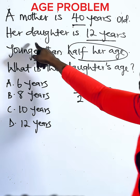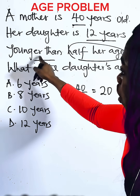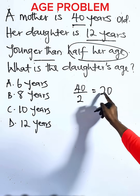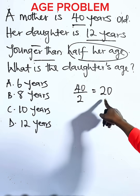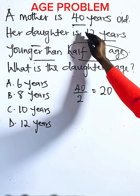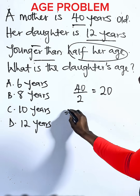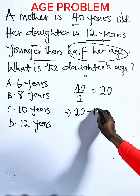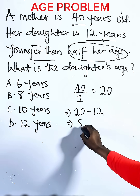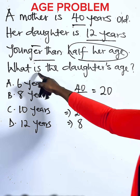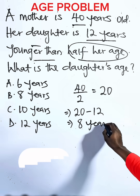The daughter is 12 years younger — 'younger' means we subtract. So we take away 12 from half of the mother's age: 20 minus 12 gives us 8. The daughter's age is 8 years old.